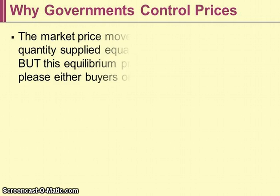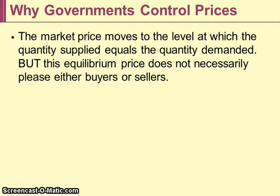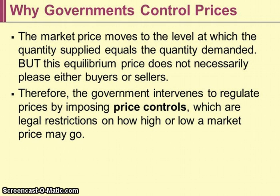Why do governments control prices? The market price, in the absence of any government intervention, will move to the level at which quantity supplied equals quantity demanded — this is called equilibrium. But this equilibrium price does not necessarily please either buyers or sellers. Therefore, the government intervenes by imposing price controls, which are legal restrictions on how high or low a market price may go.